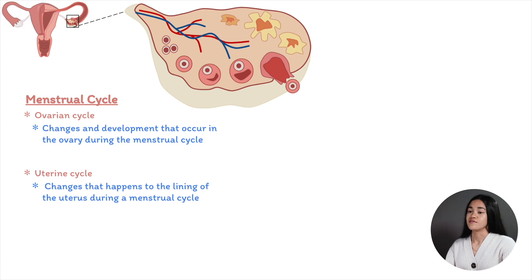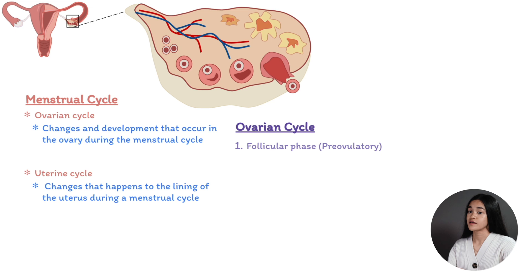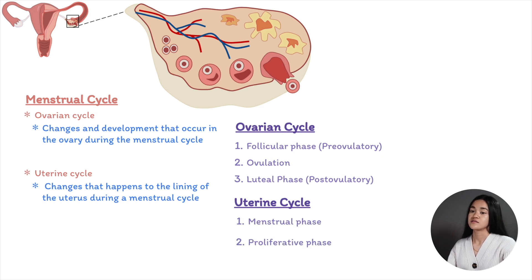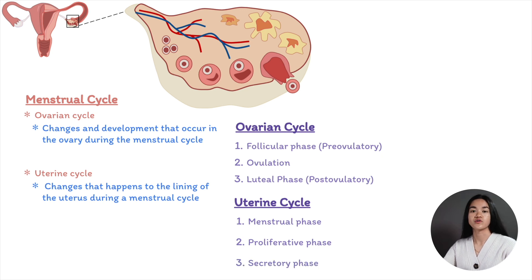We can divide the events that occur in the ovaries into three phases: the follicular phase, also known as pre-ovulatory; ovulation; and the luteal phase, or post-ovulatory. The events that happen to the endometrium can also be divided into three phases: the menstrual phase, the proliferative phase — which corresponds with the follicular phase of the ovarian cycle — and the secretory phase, which corresponds with the luteal phase of the ovarian cycle.